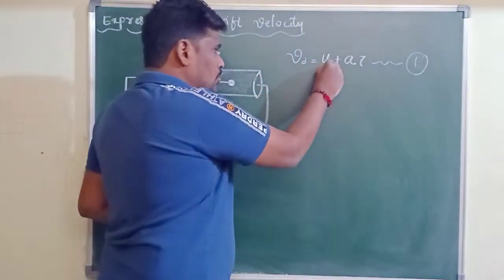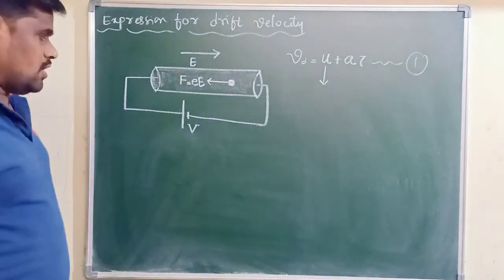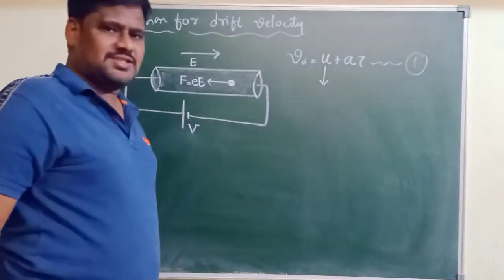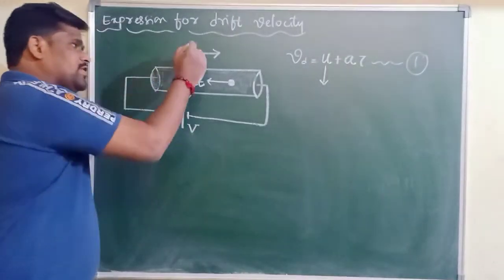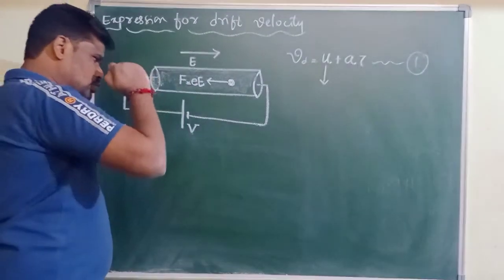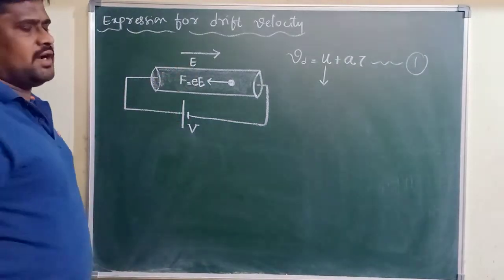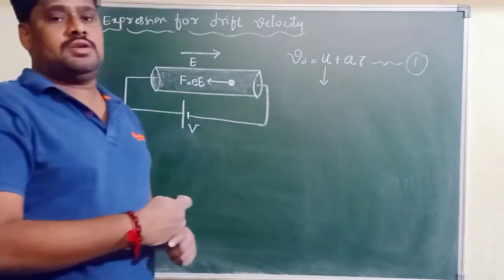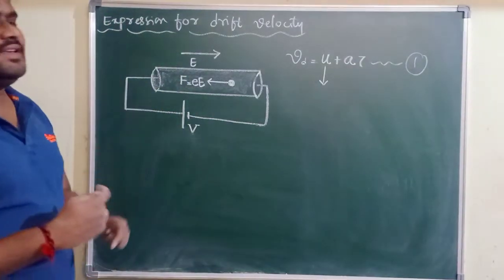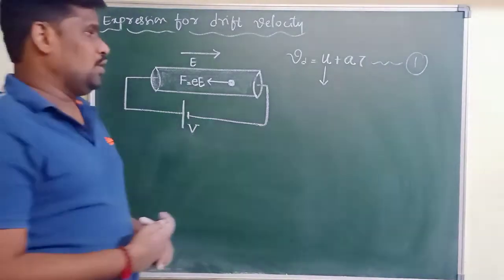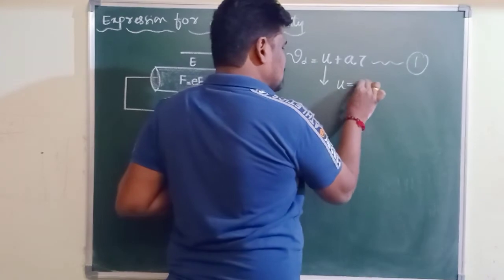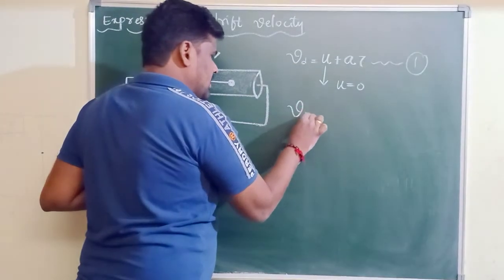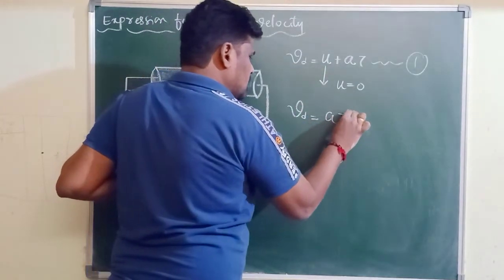u is the net velocity of free electrons before applying the potential difference. As discussed in the last class, when there is no external electric field or no potential difference across the ends of a conductor, all free electrons have random motion. Hence their average velocity is zero. Therefore u = 0, and Vd can be written as a·τ.